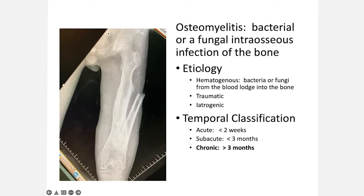In terms of the temporal classification of osteomyelitis, acute means an onset less than two weeks, subacute less than three months, and chronic — which is our topic of interest today — greater than three months.